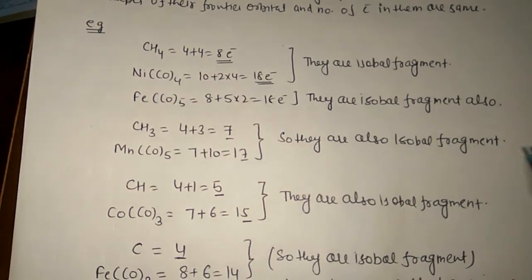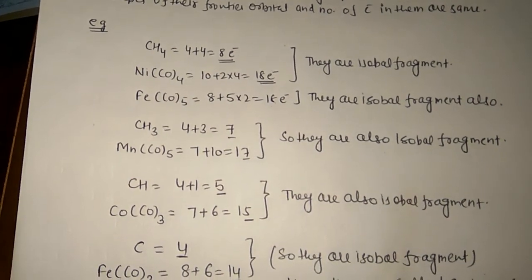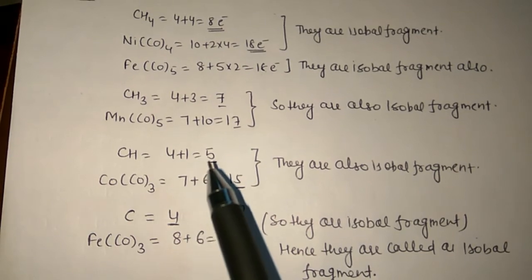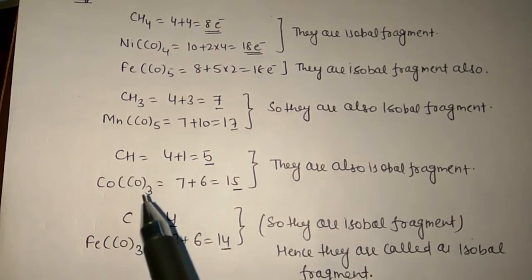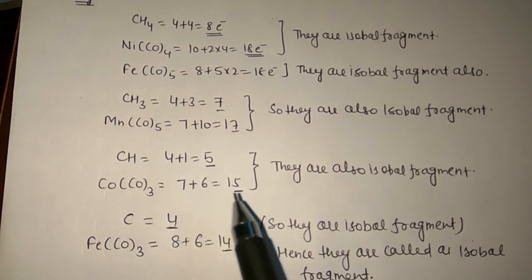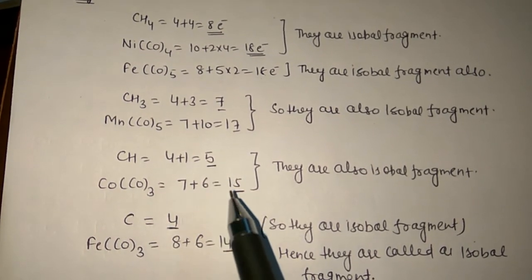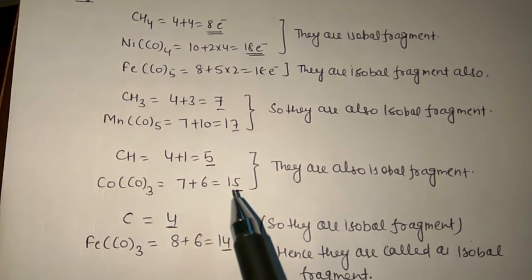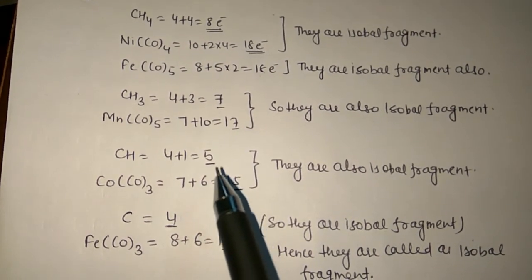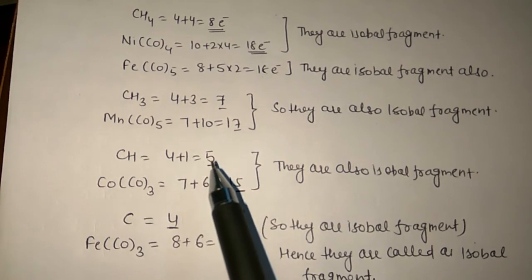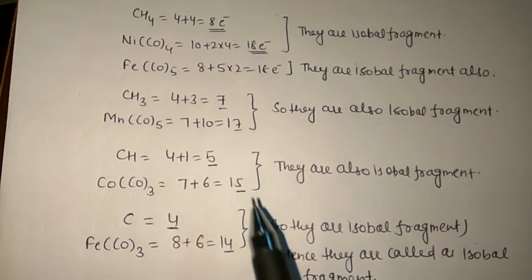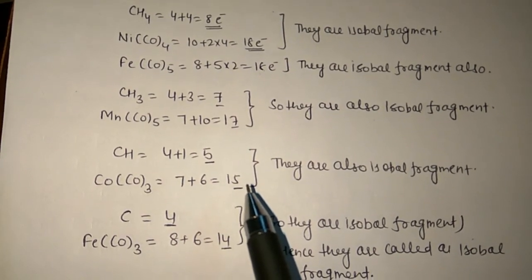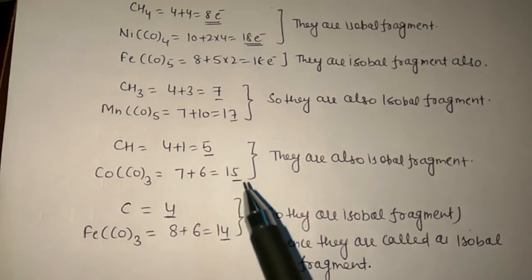For CH, the electron count is 4 + 1 = 5. For Co(CO)3, the electron count is 15, and again the last digit is the same — both end in 5. We can also see that 8 − 5 = 3 and 18 − 15 = 3, so both require three electrons for the completion of their octet. Therefore, CH and Co(CO)3 are also isolobal fragments.